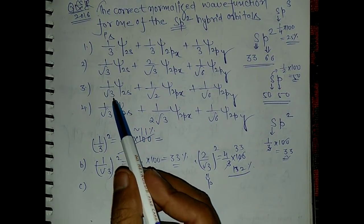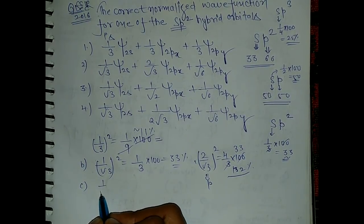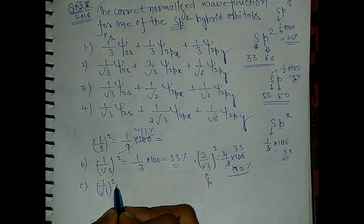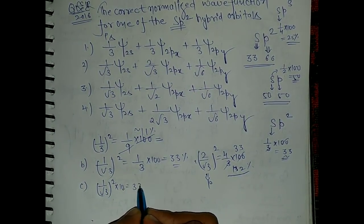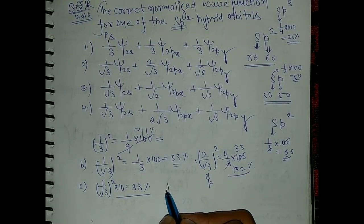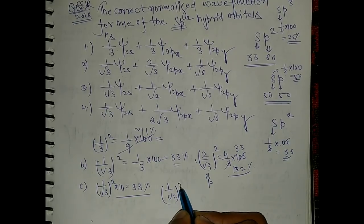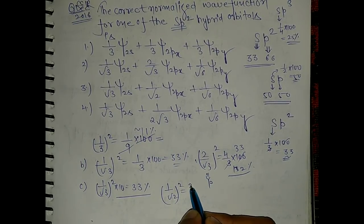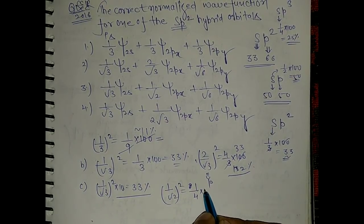Now look for the third option. So this is 1 by root 3, and we have calculated this 1 by root 3 will give you 33%. Now come to this option 1 by root 2, so this is 1 by root 2, take square, this will be around 50%.